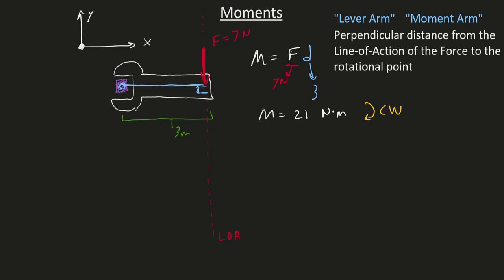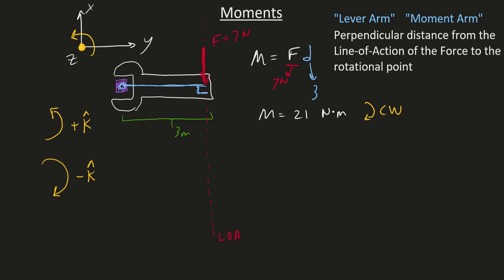Z is coming out of the screen. Hopefully you've had some experience with the right-hand rule. Take your right hand and make your fingers form a rotation in the counterclockwise direction — notice your thumb is pointing out of the page, in the positive Z direction. So counterclockwise rotations are in the positive Z direction, and clockwise rotations are in the negative Z direction. Just use that right-hand rule logic.